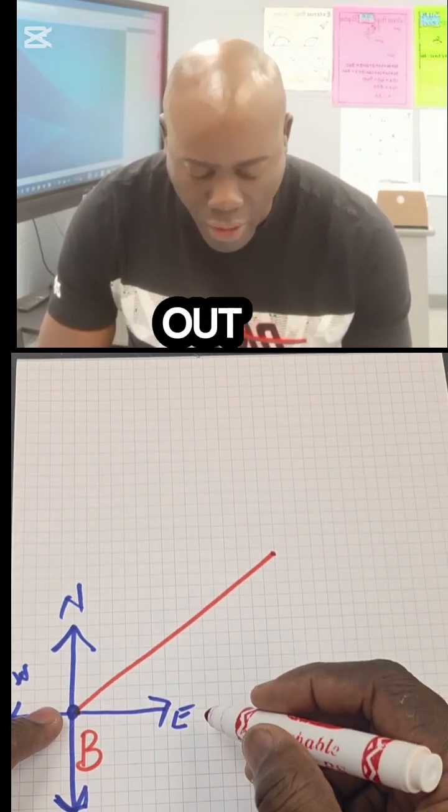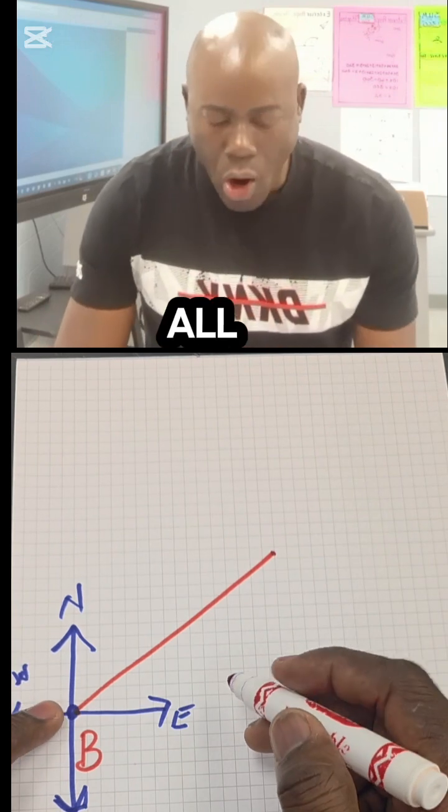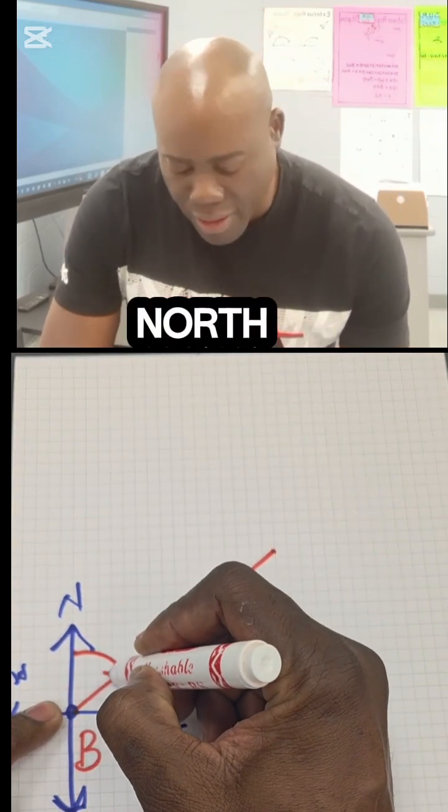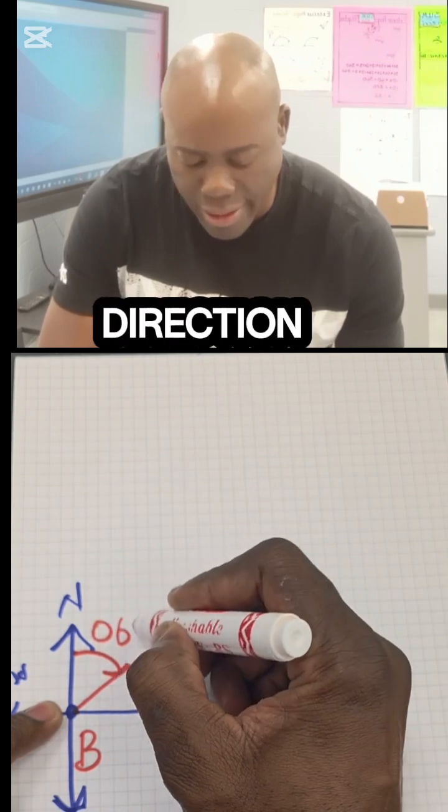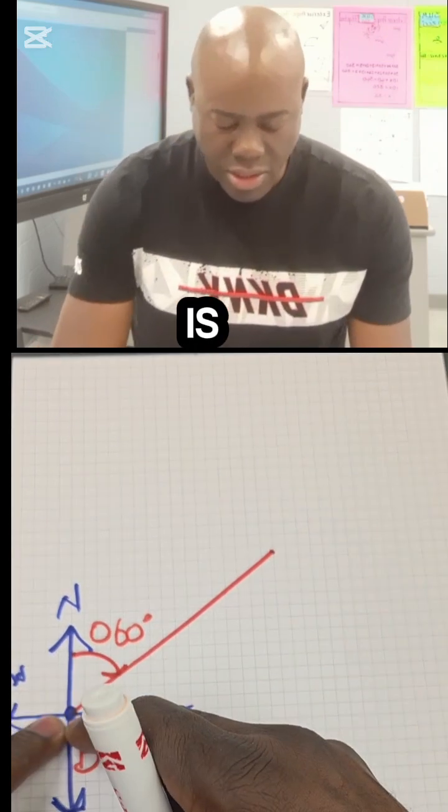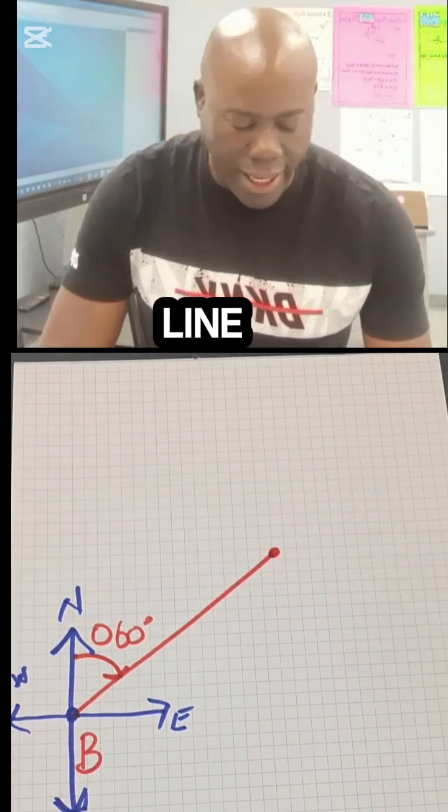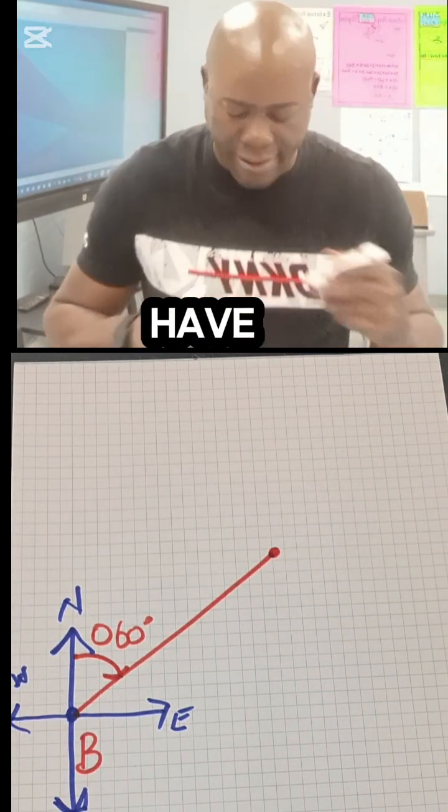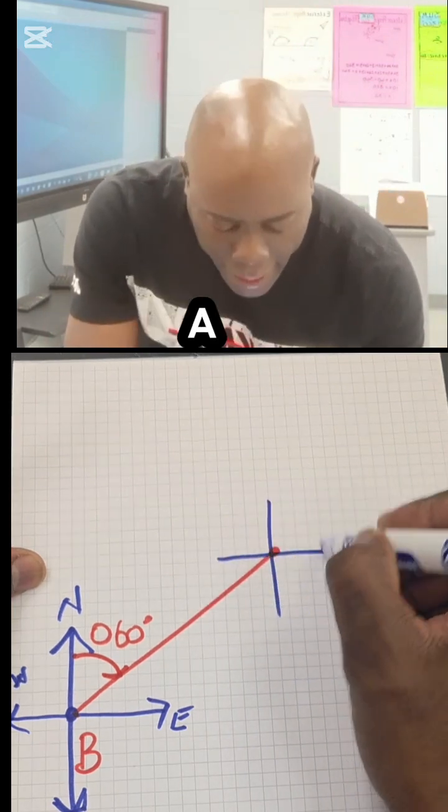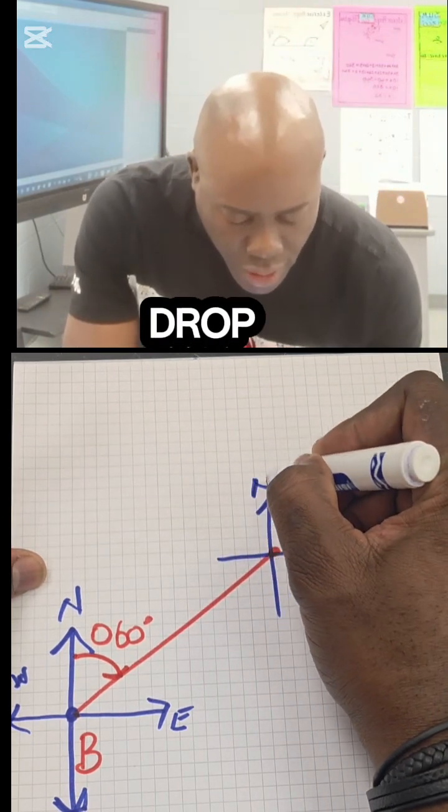All bearings are from the north, which means that from the north line going in a clockwise direction, this is our 060. So this is our 60 degrees here, and then on this line we're gonna actually have A somewhere out here.